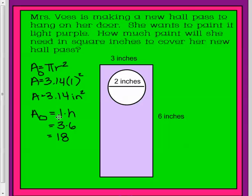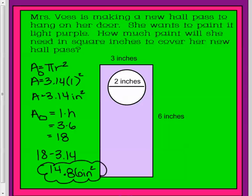So we need to take this 3.14 away from 18. What do we get? We get 14 and 86 hundredths inches squared. And that's all I've got for you. See you next time.